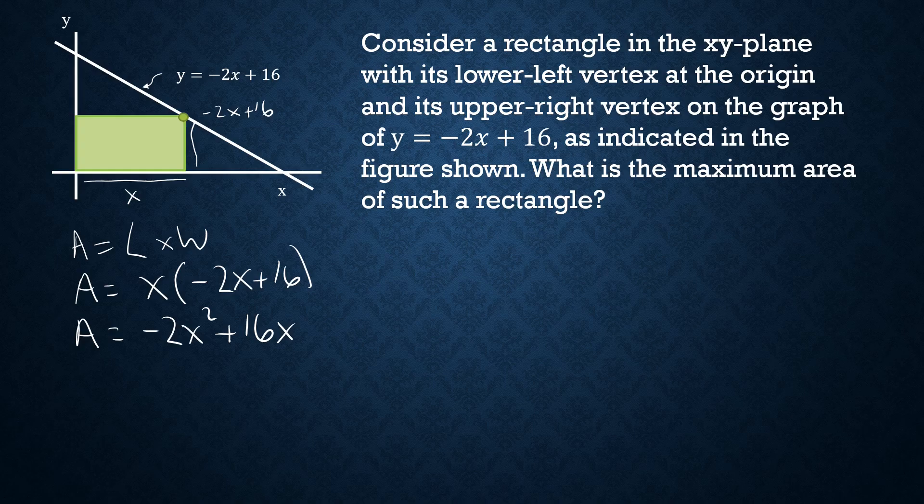So let's take the derivative. The 2 and exponent comes out front, multiply by 2, so you get negative 4x and you decrease the exponent by 1, giving us x to the first power. And then this just becomes 16. The 1 comes out front, and then the exponent goes to 0; x to the 0 is 1.